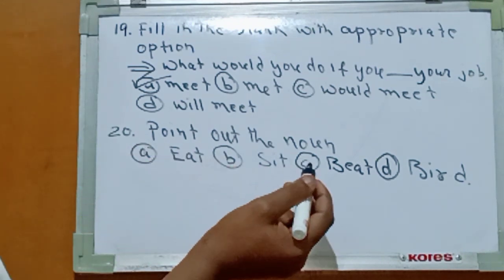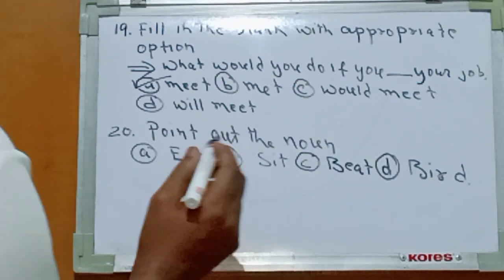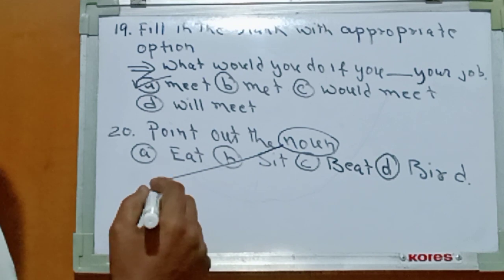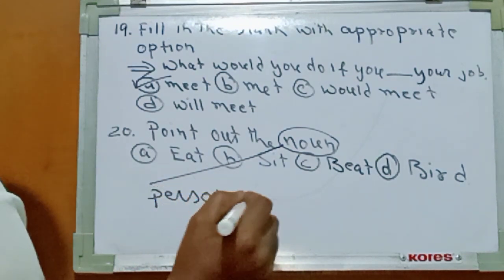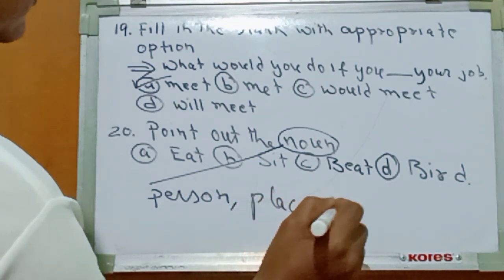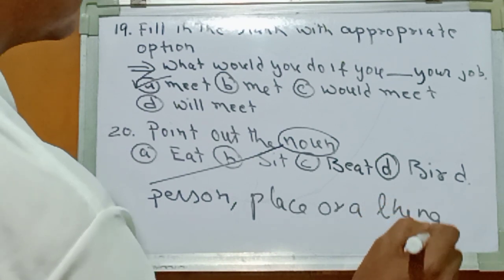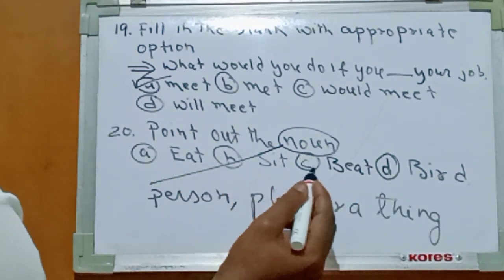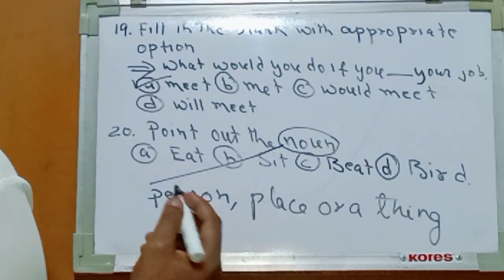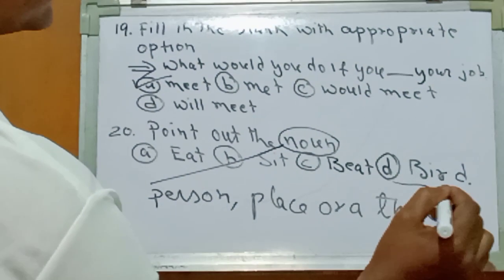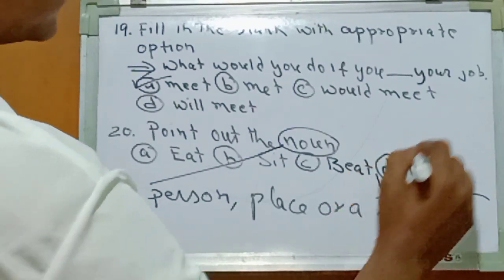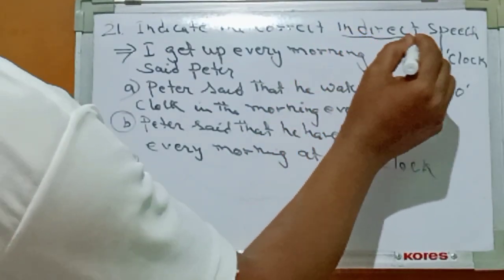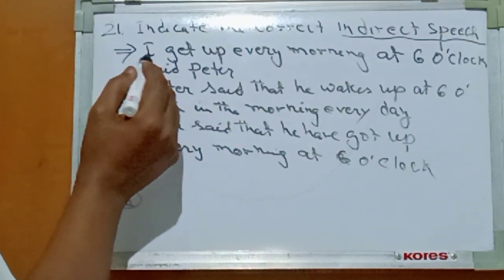Number twenty: point out the noun. Option A: eat. Option B: seat. Option C: be. Option D: bird. Now, bird is the name of a living thing, so the right answer is Option D: bird.